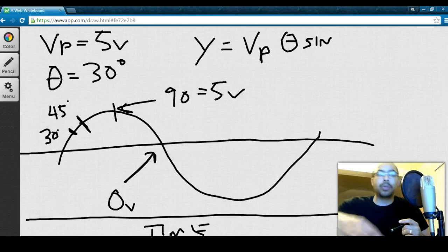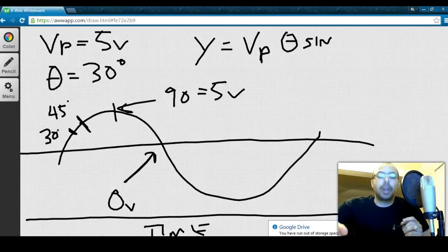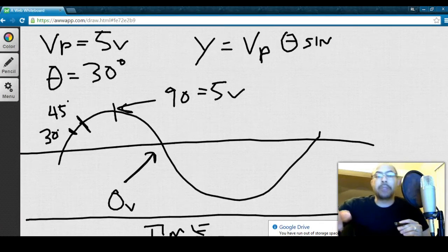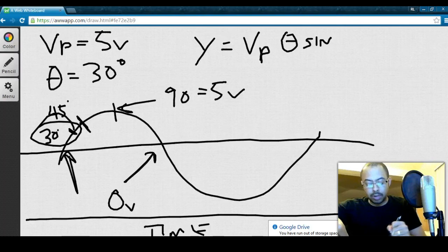So, if we have 5 volts for a peak, and we're trying to find the sine of 30. So, the sine of 30 is 0.5, and I'm going to multiply that by the peak value of 5, giving me 2.5 volts. So, that'll tell me that at 30 degrees, I'm going to have an instantaneous voltage of 2.5 volts.